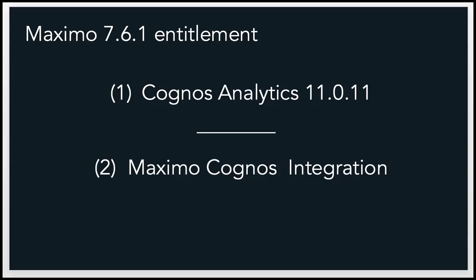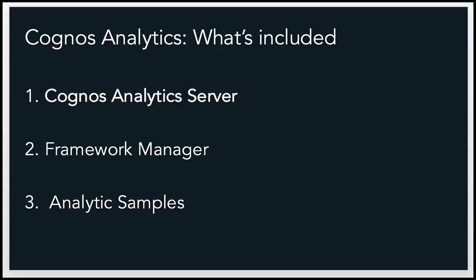People often ask what is included with this entitlement. The key parts are on two sides: the Cognos side and the Maximo side. On the Cognos side, the products you physically get with Cognos analytics are: number one, the Cognos analytics server — this is where the majority of the features, the product functionality is contained. If you're familiar with Cognos 10, this was known as the Cognos BI server, but they've changed a number of the products contained within it, and I'll show you that in just another slide.